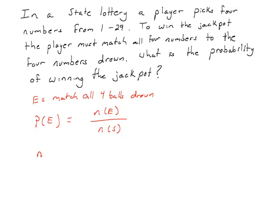The number of outcomes in E: if we have to match all four, it's a counting problem. Out of the four balls that are drawn, all four have to match. This is four choose four, or 4C4. When you work that out, you get an answer of one.